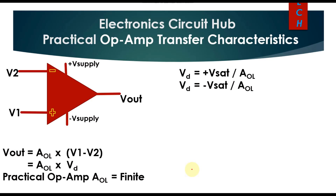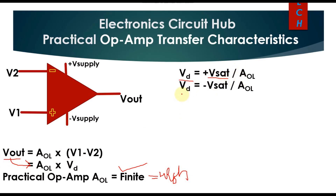Now we will understand the transfer characteristic of a practical op-amp. For a practical op-amp, the open loop gain is finite but it is very high. If you want to calculate the value of Vd using this formula: Vd equals Vout divided by Aol. That means Vout equals +Vsat divided by Aol for the positive side, and Vd equals -Vsat divided by Aol for the negative side.